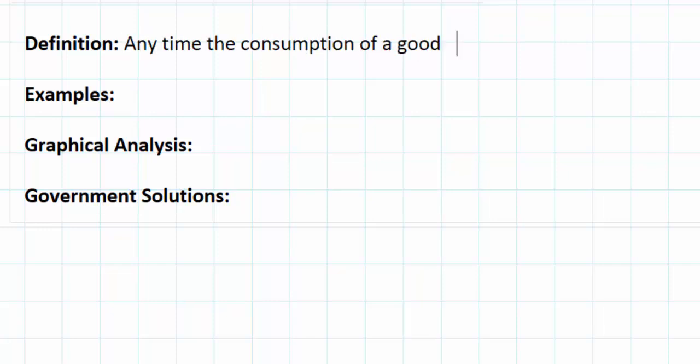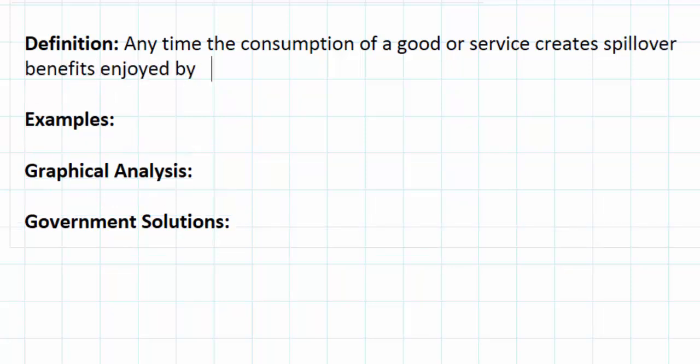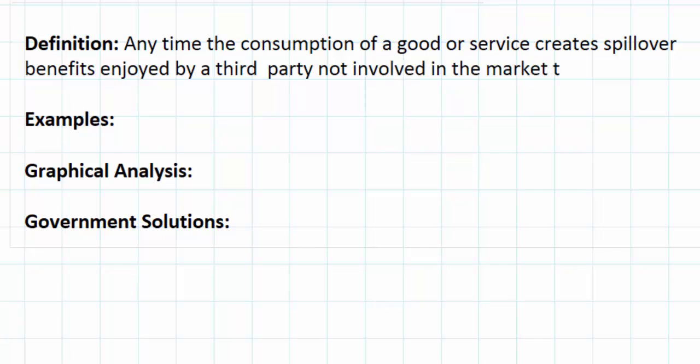Let's start with the definition of a positive externality of consumption. These market failures exist anytime the consumption of a good or service creates spillover benefits enjoyed by a third party not involved in the market transaction. This is all a fancy way of saying that a good creates benefits for society, not just for the individual that is consuming it.